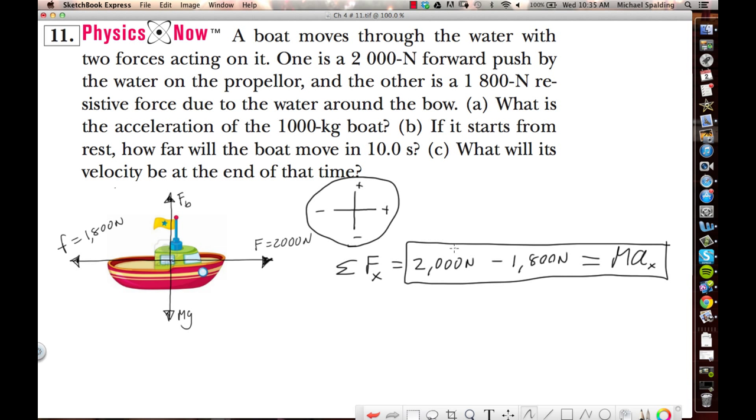Because what's 2,000 minus 1,800? 200, that's 200 newtons. That 200 newtons is the net force. Whenever you have a net force, you're going to have an acceleration. So, that acceleration does not go to zero.